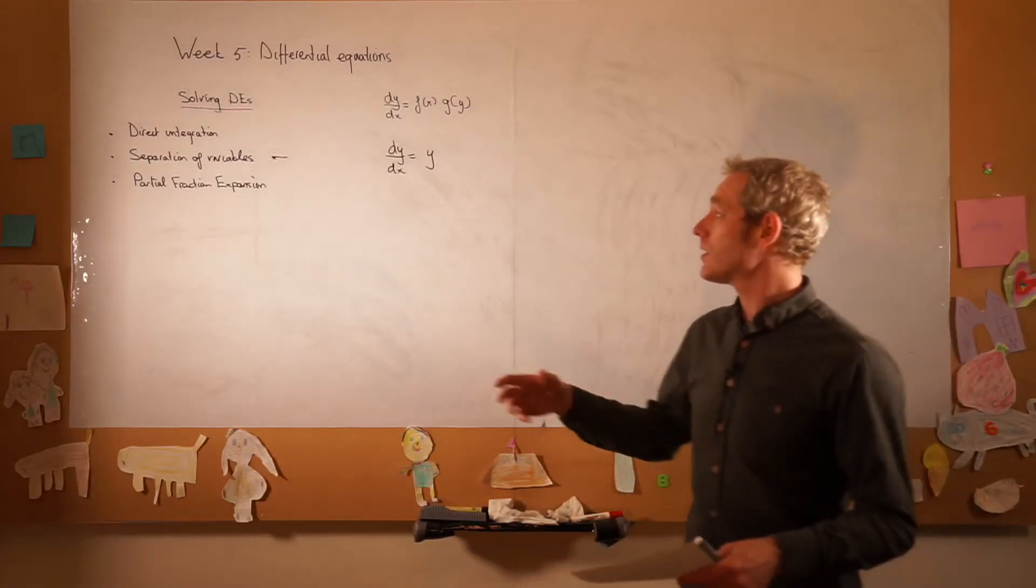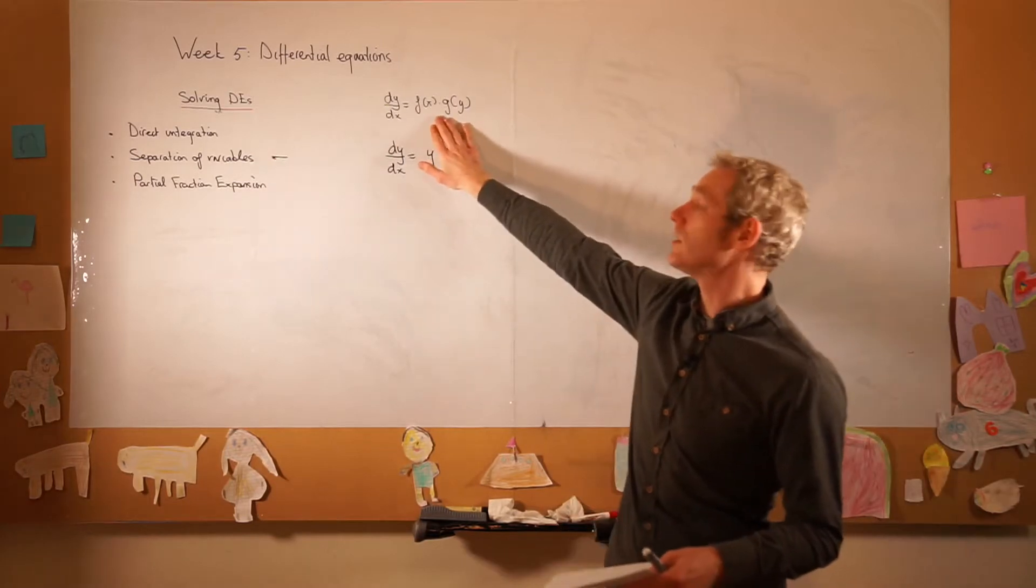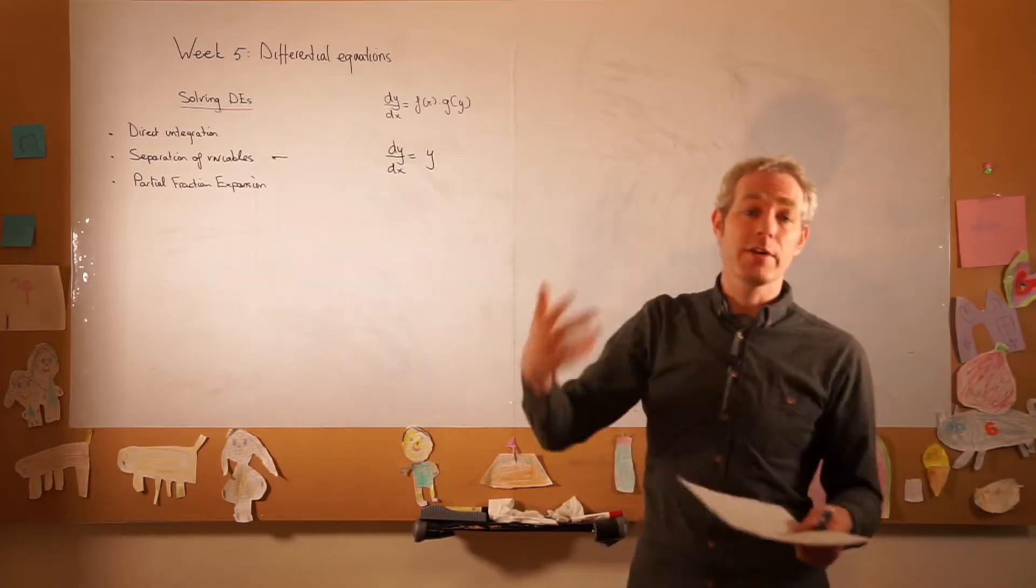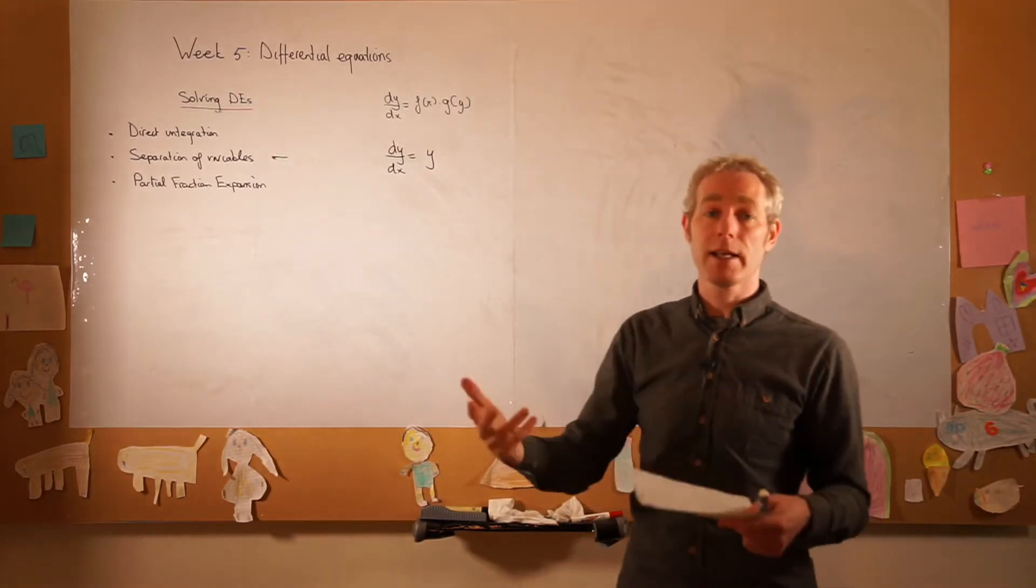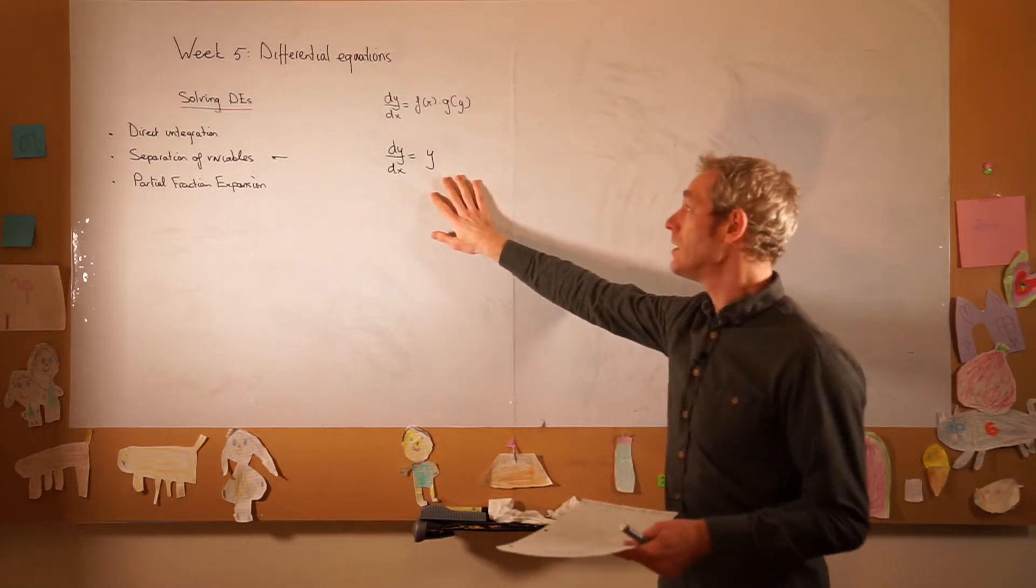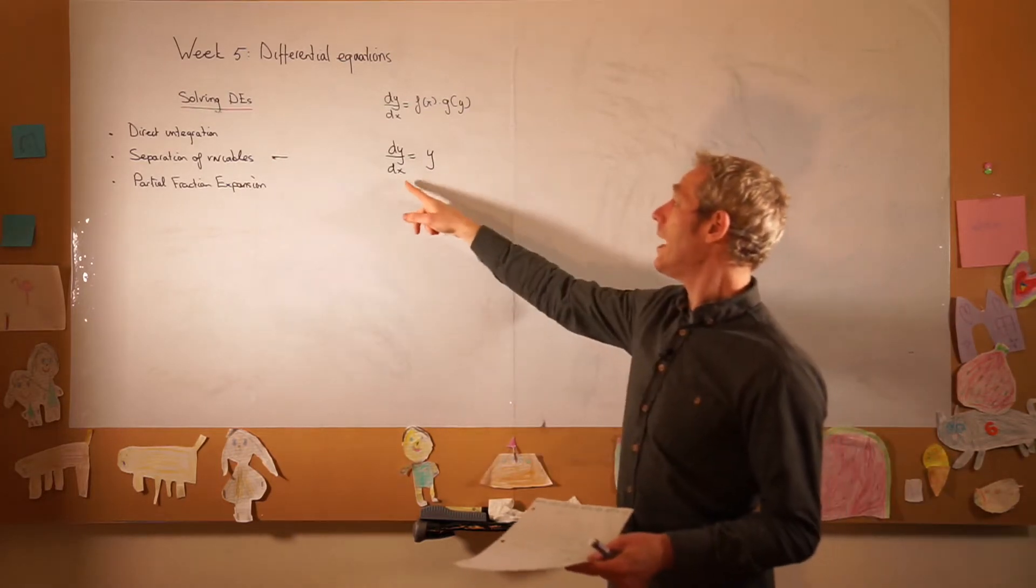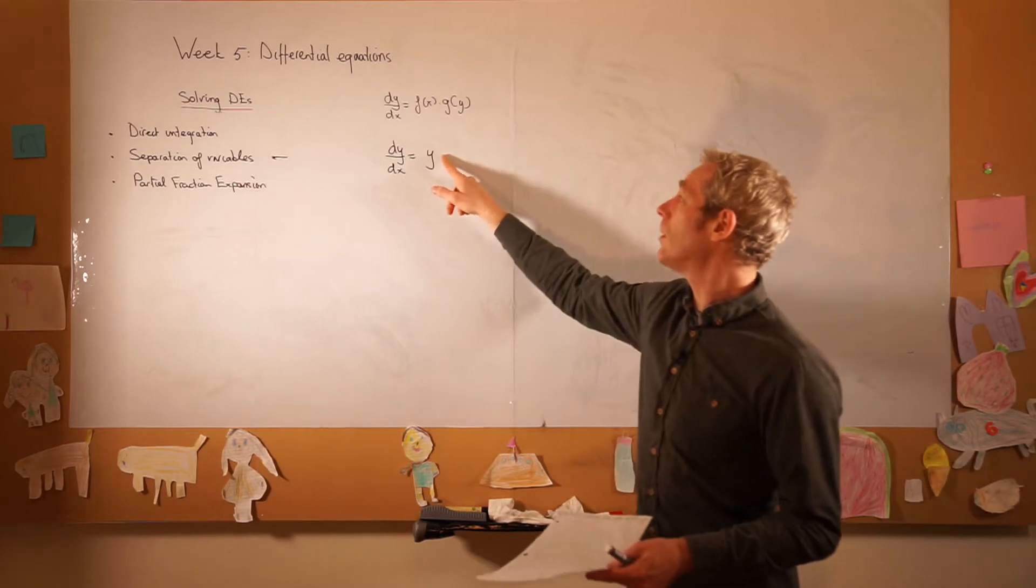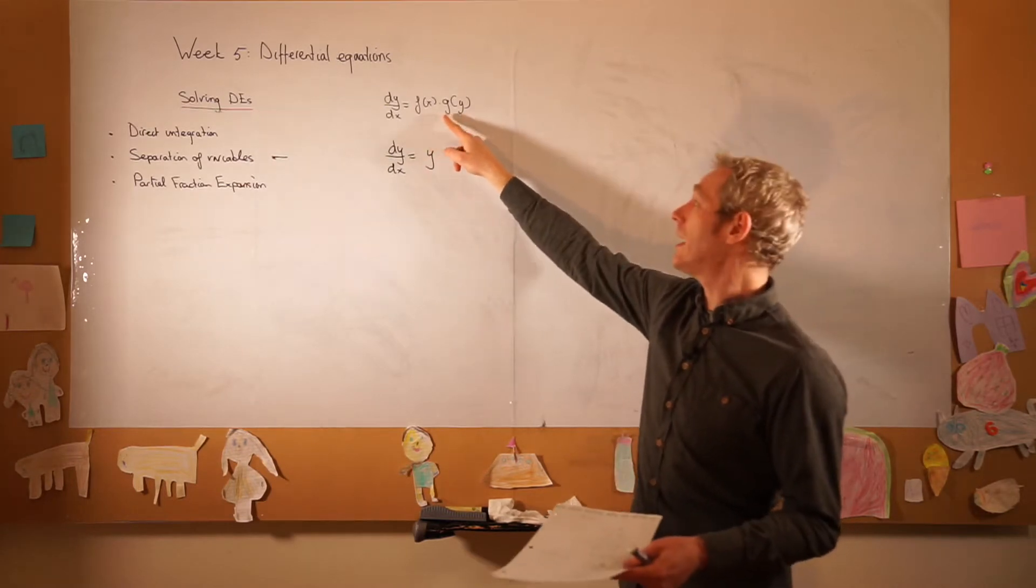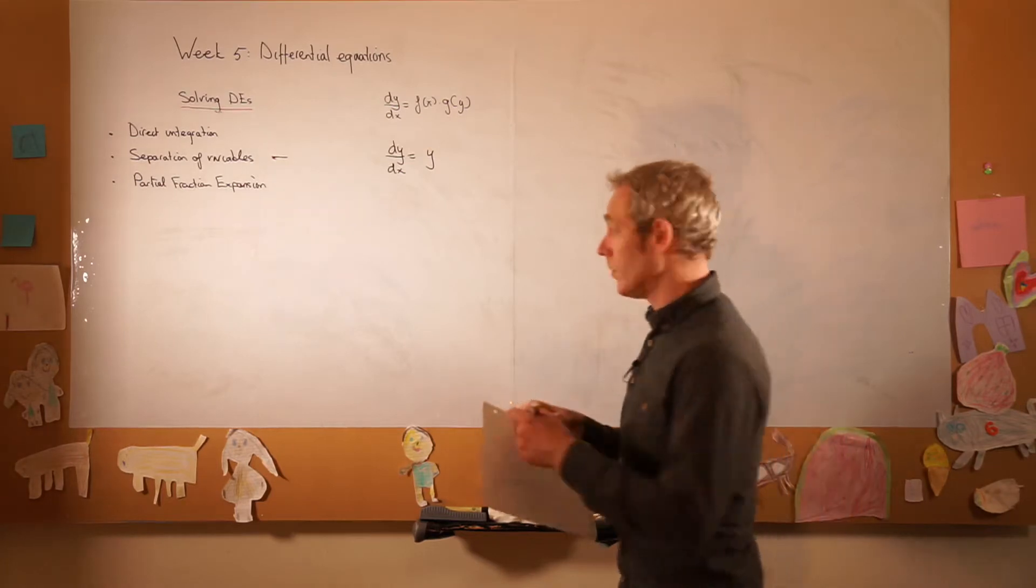We continue with our discussion of the method of separation of variables to solve differential equations of this form, where in the previous part we looked at the more complicated explanation, and now we'll look at a more shorthand explanation. This is a slightly more compact version. So we have dy/dx is equal to y, which fits this profile as g(y) is equal to y, and f(x) is simply equal to 1.